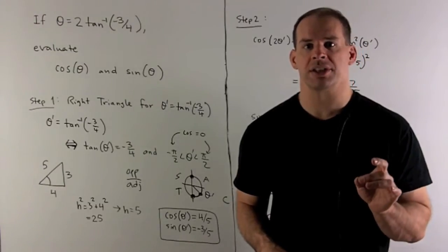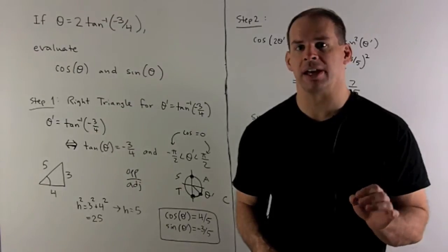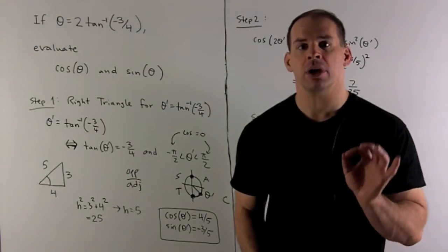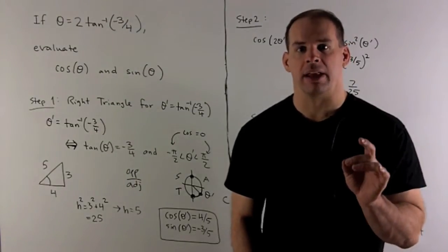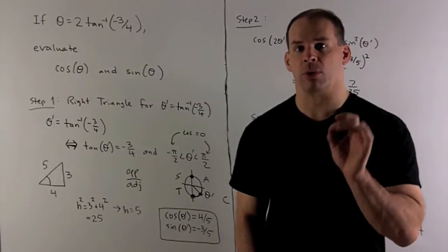If theta equals twice inverse tan of minus three-fourths, find cosine theta and sine theta. First step, I'm going to let theta prime be equal to inverse tan of minus three-fourths.